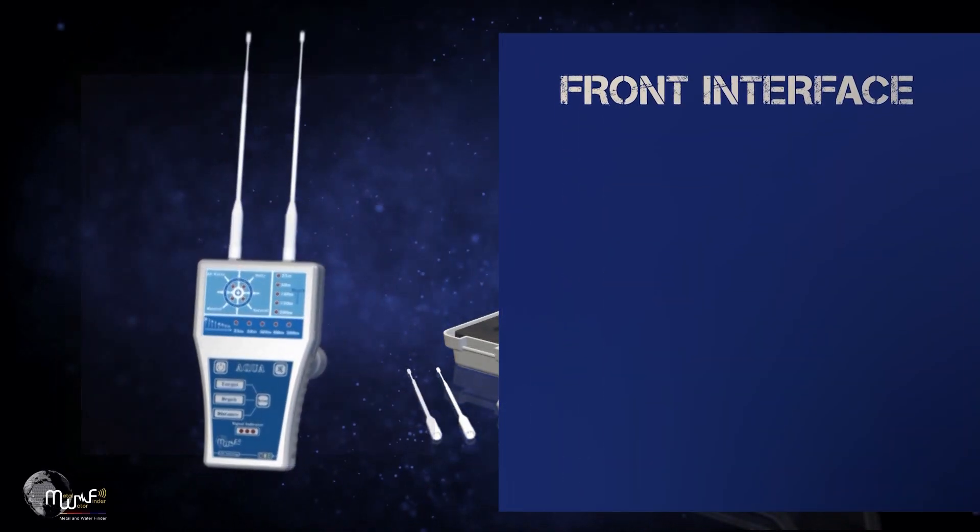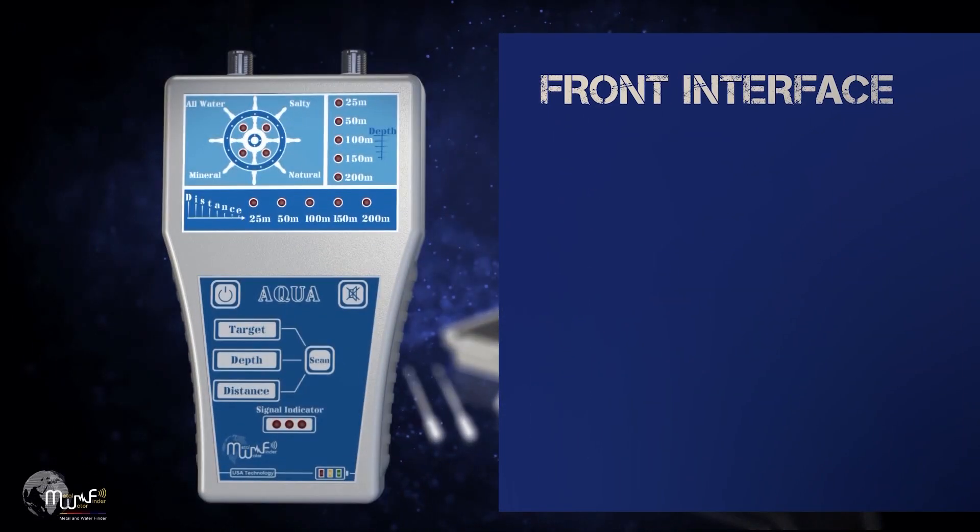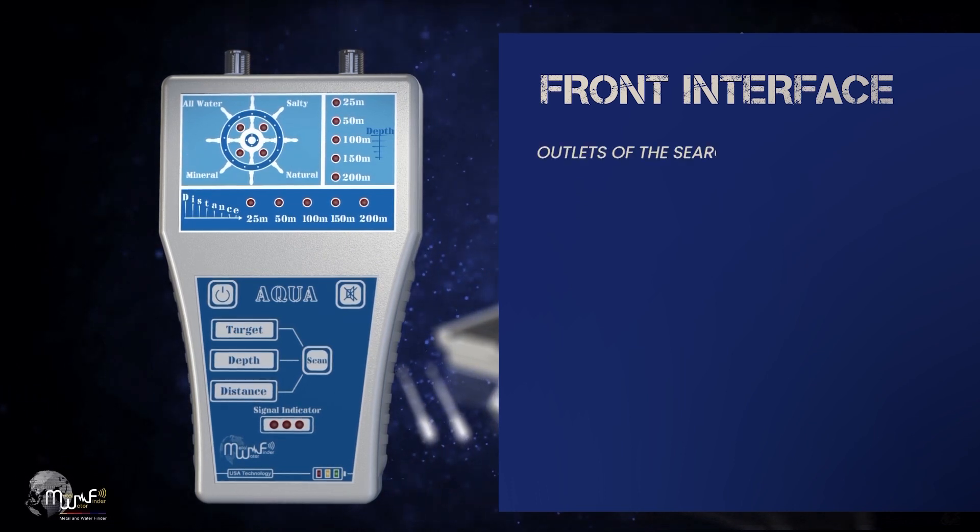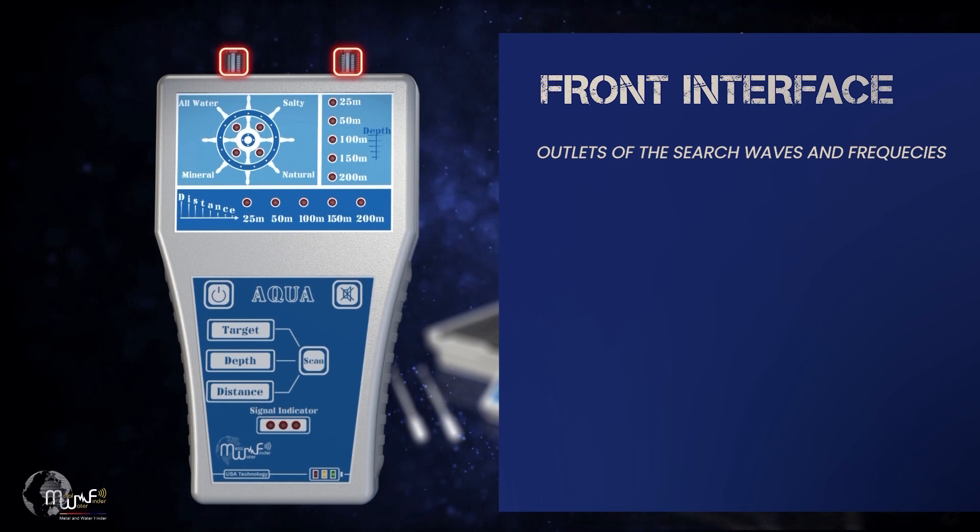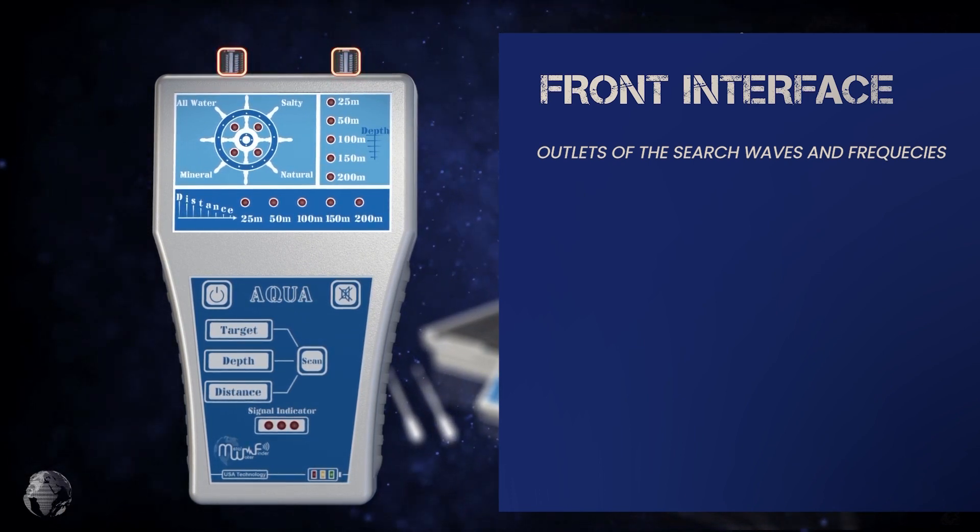The main unit of the device consists of the following. Front interface: It consists of outlets of the search waves and frequencies, to which the transmitting and receiving antennas are connected.